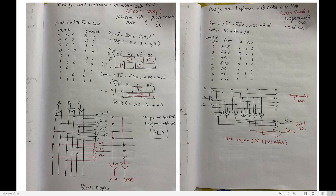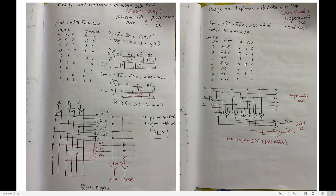Write all 7 terms: 1st — A·B̄·C̄, 2nd — Ā·B̄·C, 3rd — A·B·C, 4th — Ā·B·C̄, 5th — A·C, 6th — B·C, 7th — A·B. Now give inputs. For A·B̄·C̄: A=1, B bar so write 0, C bar so write 0. For Ā·B̄·C: A bar so 0, B bar so 0, C so 1. For A·B·C: 1, 1, 1. For Ā·B·C̄: 0, 1, 0. For A·C (no B term): A=1, B=dash, C=1. For B·C (no A term): dash, 1, 1. For A·B (no C term): 1, 1, dash. This is the truth table for PAL.